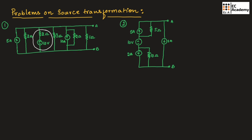For source transformation problems, always remember: current can be written as I = V/R, and voltage can be written as V = I × R. This means if you are converting from a voltage source to a current source,